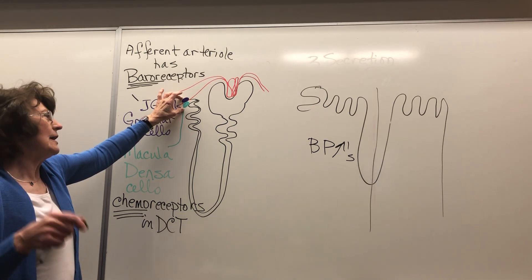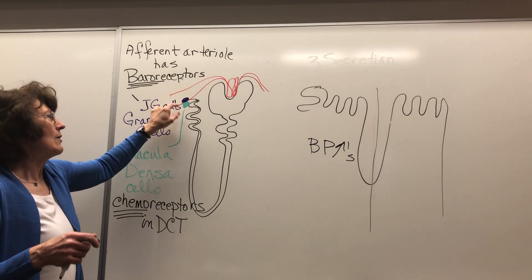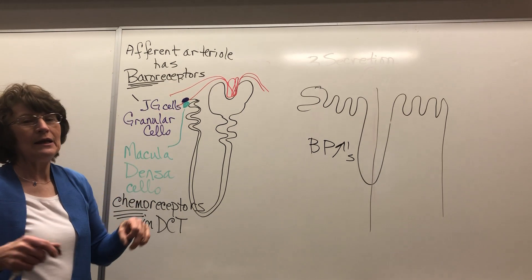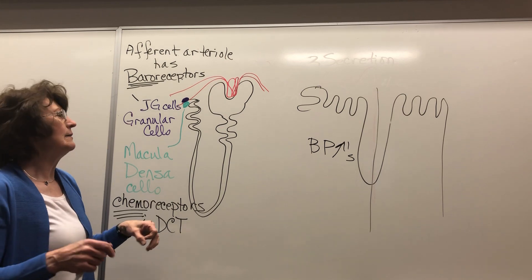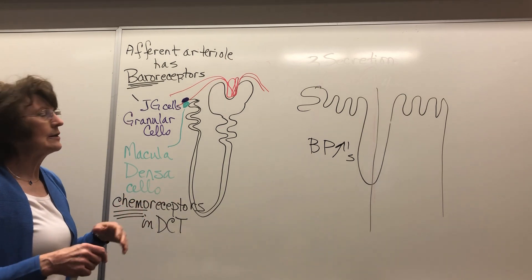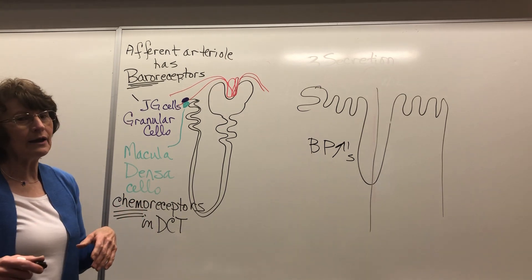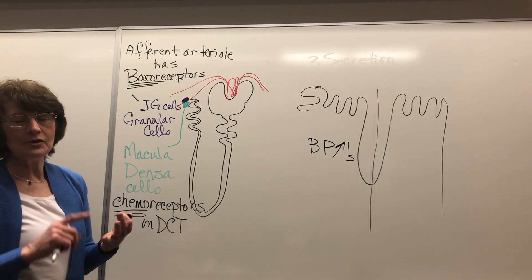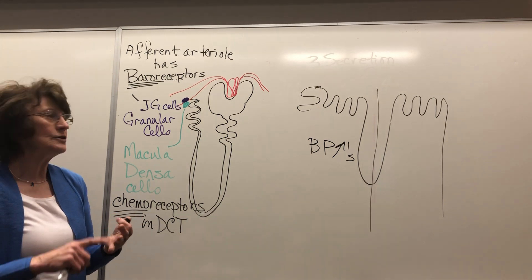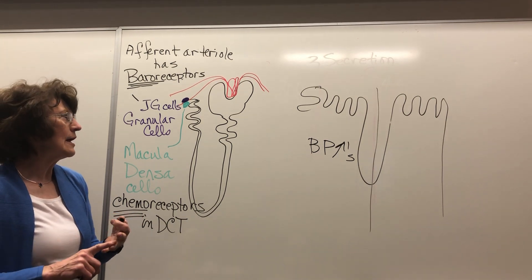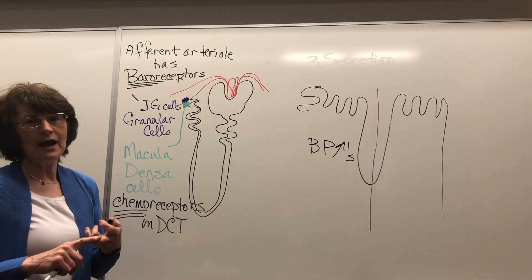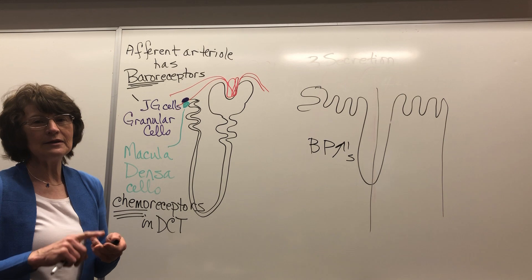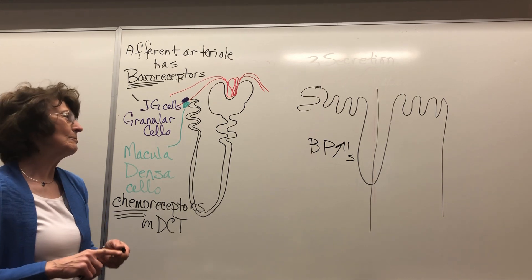What do they do? They cause the release of renin, and renin is then going to cause the cycle we just talked about: angiotensinogen → angiotensin 1 → angiotensin 2 and the release of aldosterone.